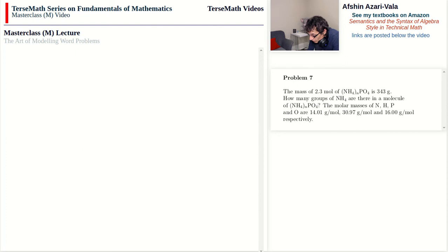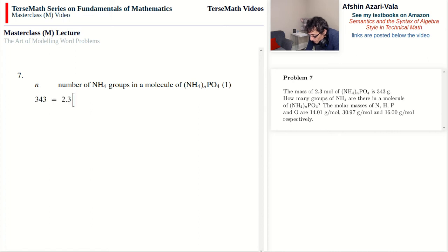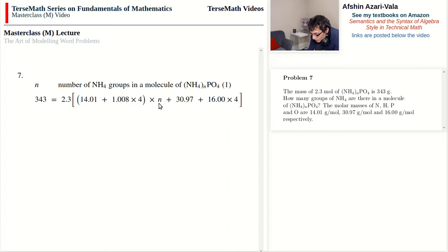Problem 7: the mass of 2.3 moles of (NH₄)ₙPO₄ is 343 g. How many groups of NH₄ are there? Molar masses of N, H, P, and O are given. With n being the number of NH₄ groups: 343 = 2.3 × [n(14.01 + 4 × 1.008) + 30.97 + 4(16)]. The mass of NH₄ is multiplied by n; by convention, a quantity symbol multiplying brackets is written on the right.